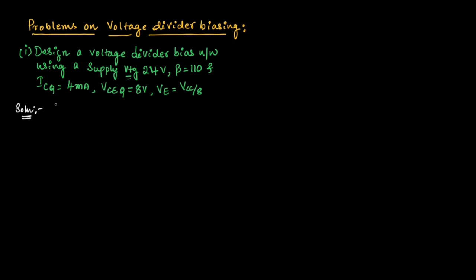Before solving the problem, first you need to write the given data. They have given the supply voltage as 24 volts, which means VCC is equal to 24 volts. Also, beta is equal to 110, ICQ is equal to 4 mA, and VCEQ is equal to 8 volts.